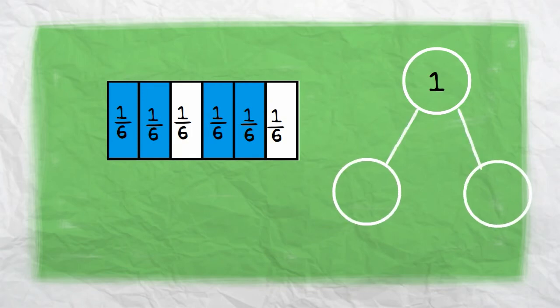We can see, using the number bond, that 4 sixths equals the shaded parts, and 2 sixths equals the unshaded parts, but when combined together, still equals one whole.